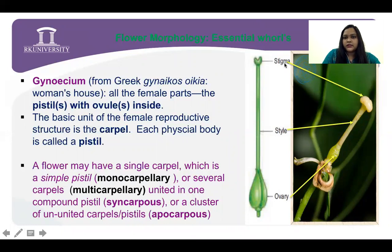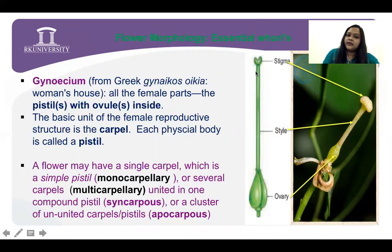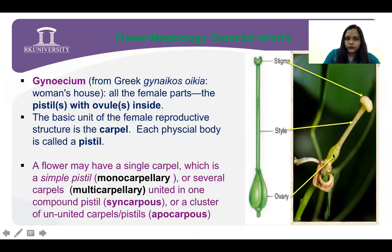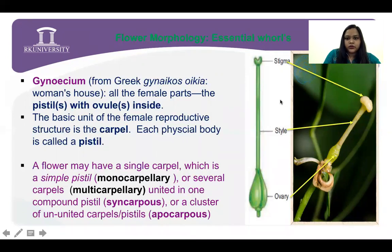The upper one is the stigma. Then the cylindrical tube-like structure is called style. Then the lowermost bulgy structure is called ovary, which contains the ovule. The basic female reproductive structure is the carpel. Each physical body is called pistil, as I told you — in common terms the gynoecium is called pistil.